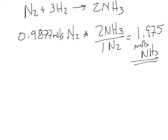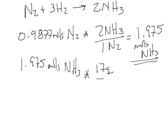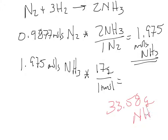So now I know that's how many moles. If I take my 1.975 moles of ammonia, and the second part of the question asked how many grams — if I multiply this by 17 grams per one mole, I get my answer: 33.58 grams of ammonia.